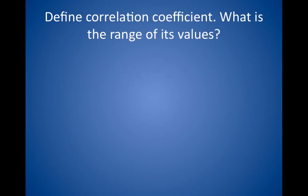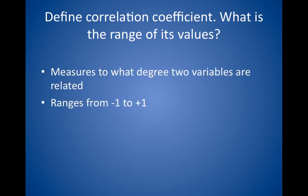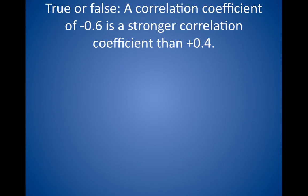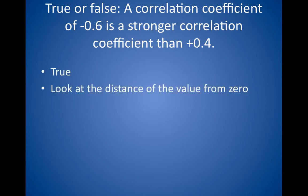Define correlation coefficient. What is the range of its values? A correlation coefficient measures to what degree two variables are related. The value of the correlation coefficient ranges from -1 to +1. True or false: a correlation coefficient of -0.6 is a stronger correlation coefficient than +0.4. True. The important factor in determining the strength of the relationship between the two variables is the distance of the value from zero. A zero correlation equals no association whatsoever. Positive 1 equals a perfect positive correlation — when one variable increases, so does the other. Negative 1 equals a perfect negative correlation — when one variable increases, the other decreases. Therefore, use the absolute value to give you the strength of the correlation; for example, -0.3 is equal in strength to +0.3.